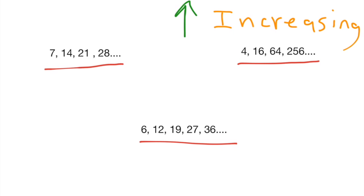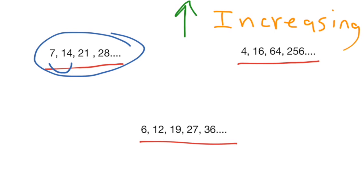There are a couple different ways a pattern can increase. In this first example here — I'm going to circle it — you'll notice that the numbers are going up, but they seem to be going up by a pretty small amount each time. For instance, it goes from 7 to 14, then 14 to 21, then 21 to 28. In this type of pattern, the best way to figure out what is happening is to just focus in on these first two numbers right here.